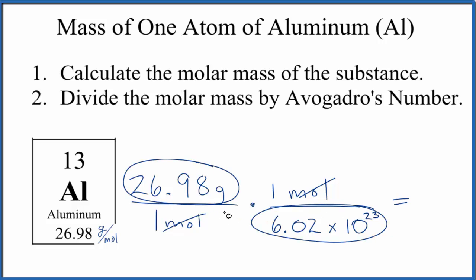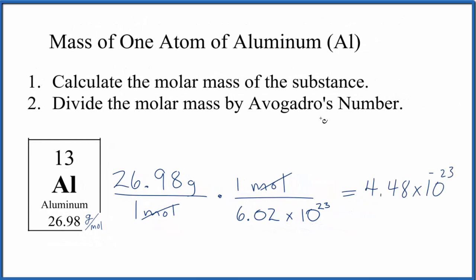So we divide 26.98 by Avogadro's number and we get, and the units, that's going to be grams. If you wanted to convert this to kilograms, you just divide this number by a thousand.